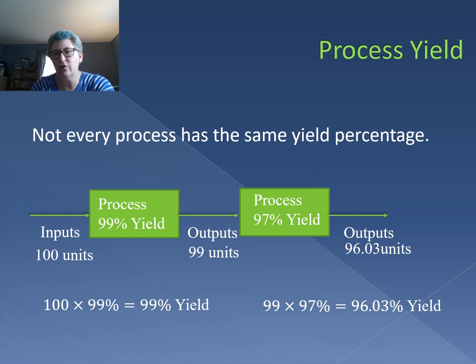Not every process is going to have the same yield percentage, so you have to be careful and look at the process yield of each sub process or activity. Here we have 100 units, a 99% yield provides us with 99 outputs. So only 99 units are entering the second sub process, which has a 97% yield. So we started with 100 and now we're down to 96.